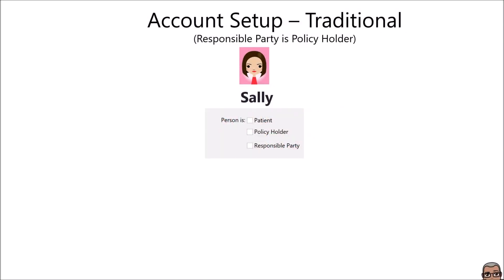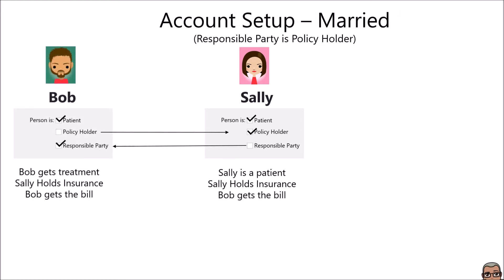This is Sally. She is a patient, a policyholder, and a responsible party. Remember those three things: patient means she gets treatment, policyholder means she's the one who actually holds the insurance, and responsible party means she gets the bill. She's a single woman who has her own policy, wants her own bill, and is a patient. Sally is a patient, Sally holds the insurance, Sally gets the bill.